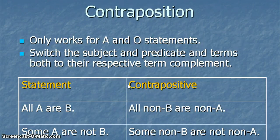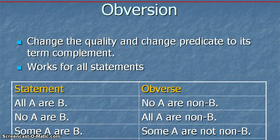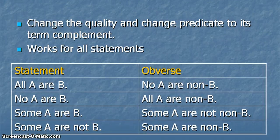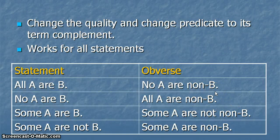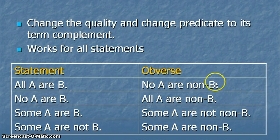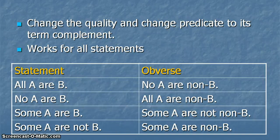If we have all A are B, the obverse is no A are non-B. If we have no A are B, the obverse is all A are non-B. Some A are B becomes some A are not non-B. And some A are not B becomes some A are non-B. Now you're looking at this and thinking, why am I turning this into non when I'm trying to get rid of non's? In fact, what we're trying to do is go the opposite way — so if you have no A are non-B, you can turn it to all A are B. That's what's nice about obversion: it can be used for all of these different statements to get rid of the non's.